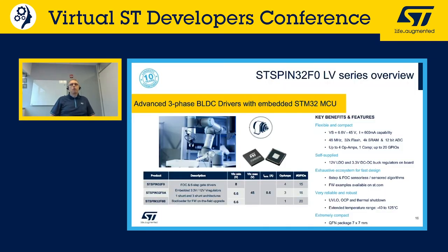Currently there are three options in the low voltage STSPIN32F0 family. Common electrical parameters include a voltage range up to 45V, with the lower limit as low as 6.6V depending on version. A built-in buck converter provides 3.3V for the microcontroller, and an LDO provides 12V for the gate driver. All drivers include undervoltage lockout, overcurrent protection, thermal shutdown, an extended temperature range, and come in a compact 7x7 QFN package.